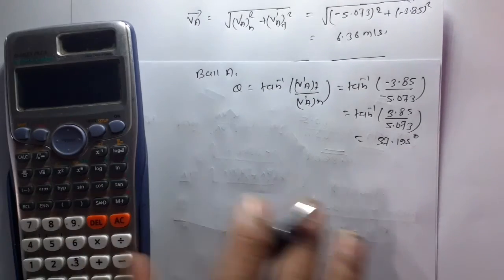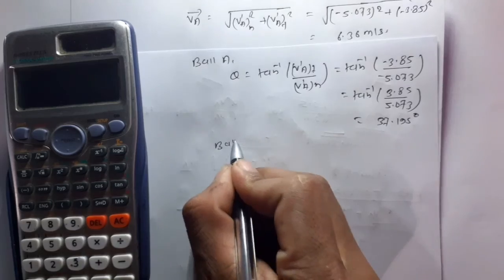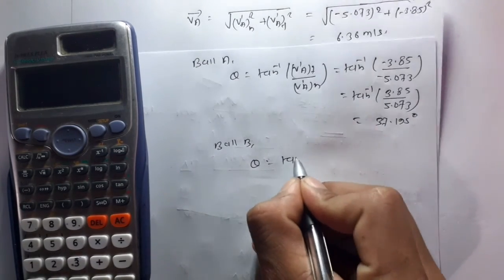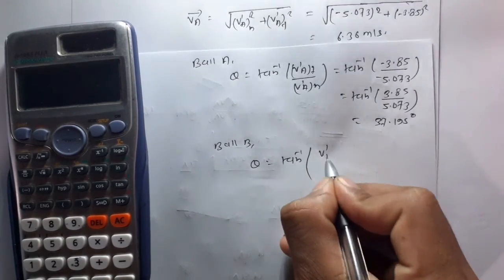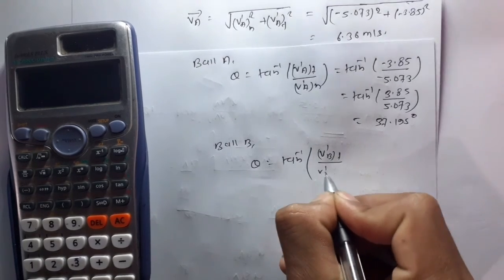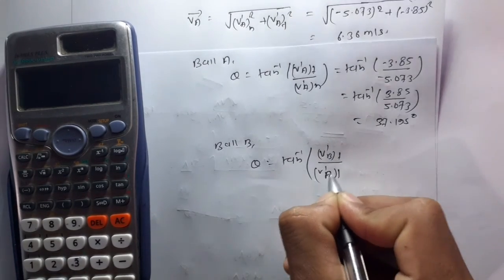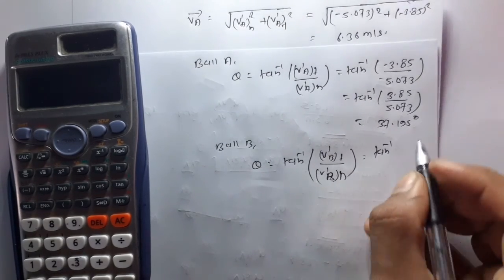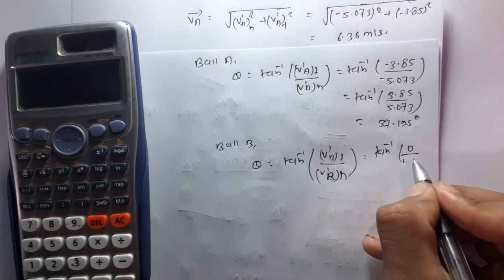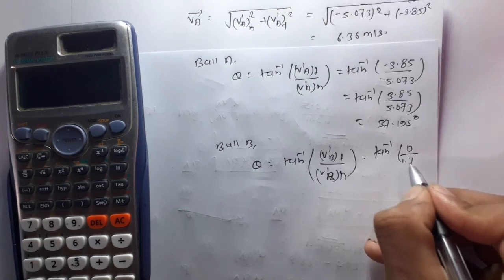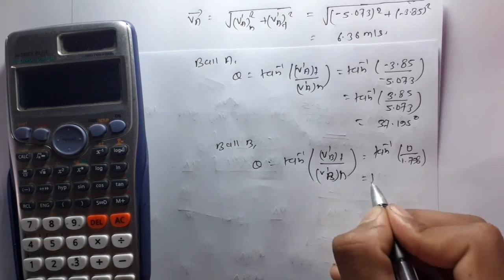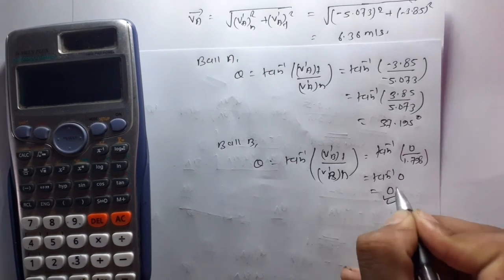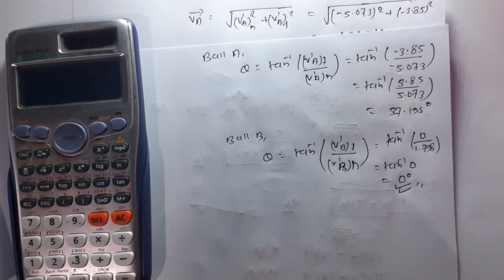For ball B: V'_B = sqrt(V'_BN² + V'_BT²) = sqrt(1.798² + 0²) = 1.798 meters per second. The direction of ball B: theta = tan⁻¹(V'_BT / V'_BN) = tan⁻¹(0 / 1.798) = 0 degrees. This completes the solution for this question.